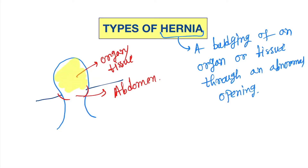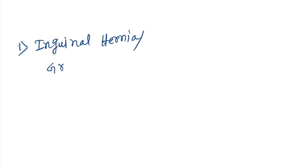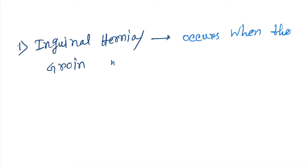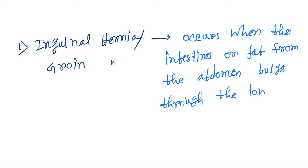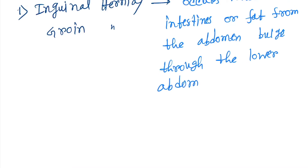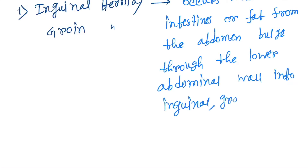Now let's discuss the types. The first one is inguinal hernia, also called groin hernia. This occurs when the intestine or fats from the abdomen bulge through the lower abdominal wall into the inguinal or groin area.